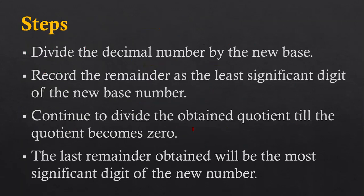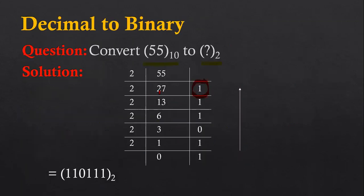The next step says continue to divide the obtained quotient till the quotient becomes zero, and the last remainder obtained will be the most significant digit. So 27 is divided by two 13 times — remainder is one. Then 13 is divided six times, so six times two is 12 — remainder is one. Then six is divided by two three times — remainder is zero. Then three is divided by two one time — remainder is one. Then one cannot be divided by two, so remainder is one.